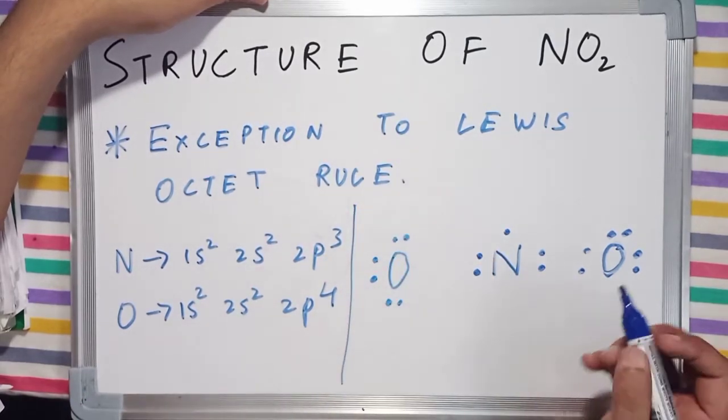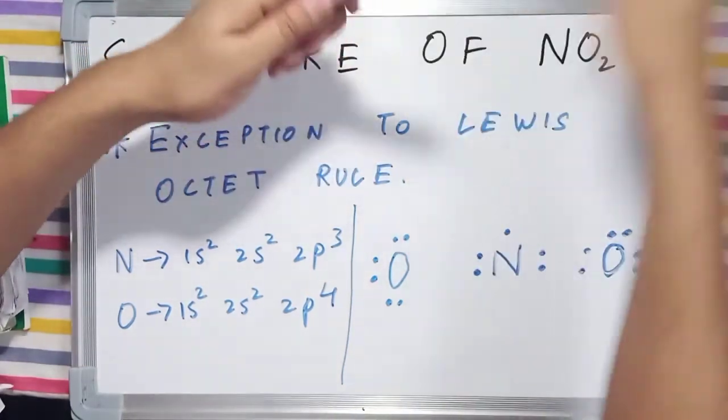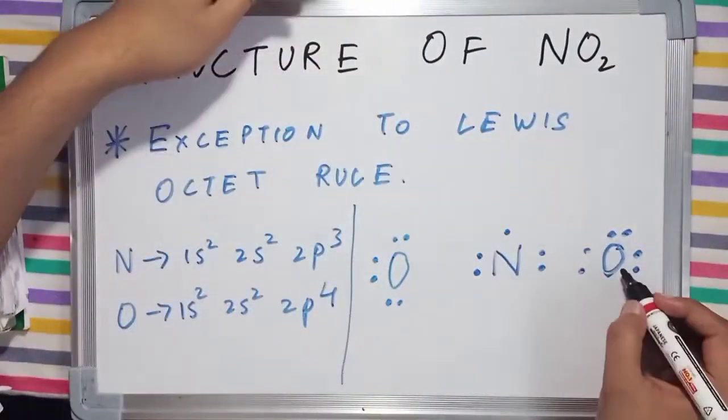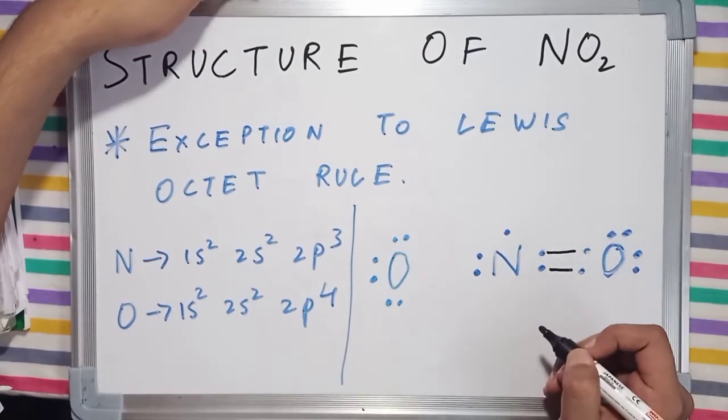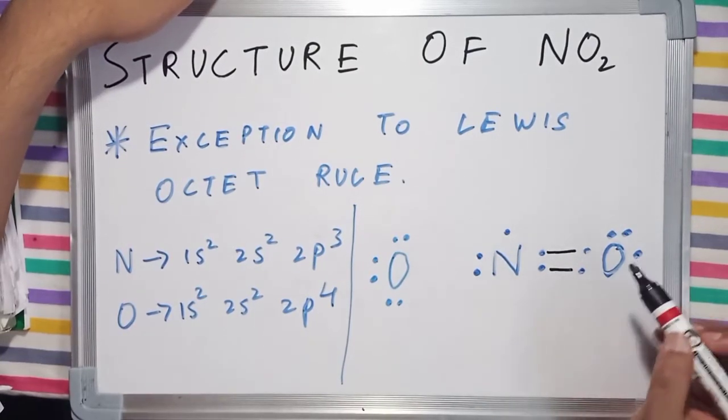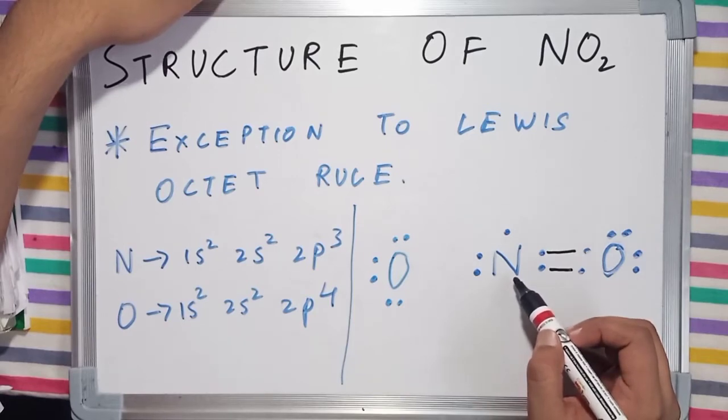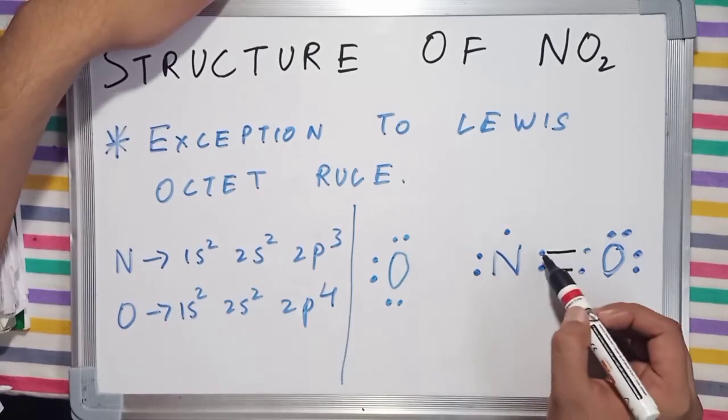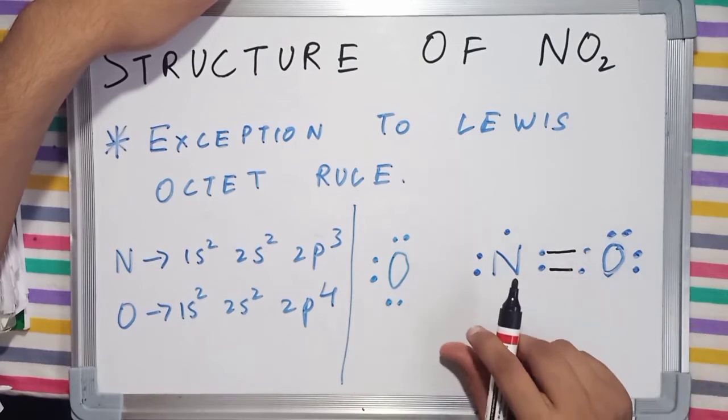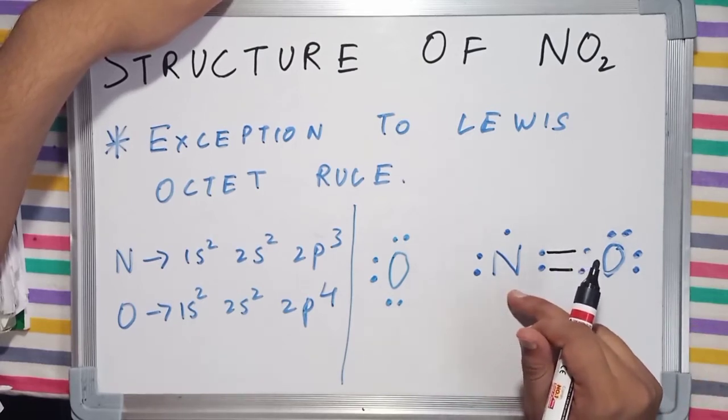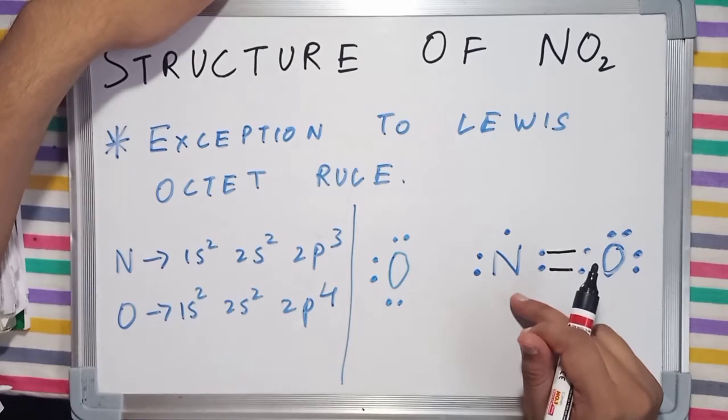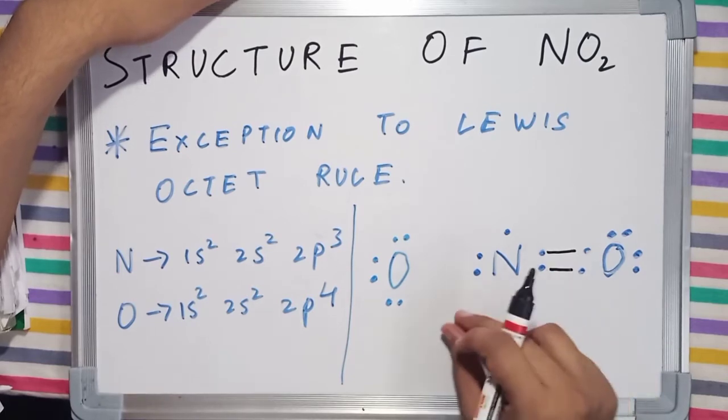Now, nitrogen will make 2 bonds with this particular oxygen, first and second bond. Notice the number of valence electrons in nitrogen. It is 1, 2, 3, 4, 5, 6, 7. Here comes the twist. Nitrogen just needs a single electron to complete its valence shell or to complete its octet. But that is not the case in this particular molecule.